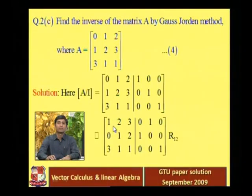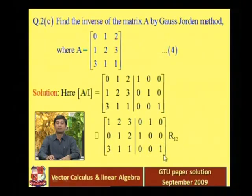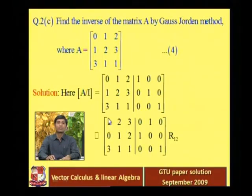Our first process: the first row is now 1 2 3 0 1 0, and the second row is 0 1 2 1 0 0. The third row is 3 1 1 0 0 1. Now, what should be the next process? The leading entry is 1, and below that leading entry we already have zero, but the last element of the first column we want to make zero.